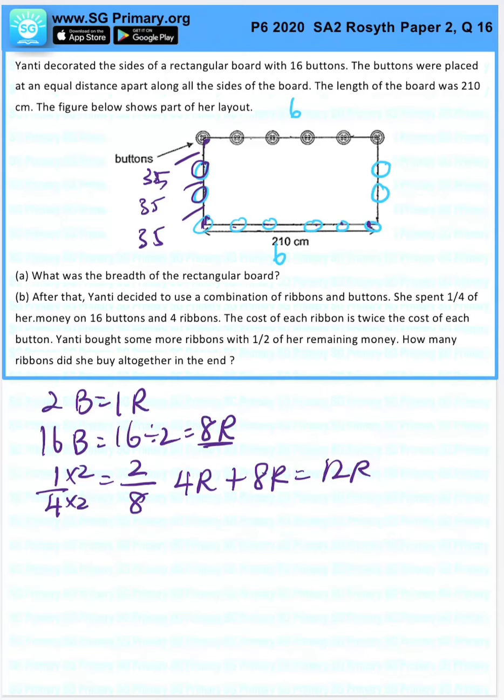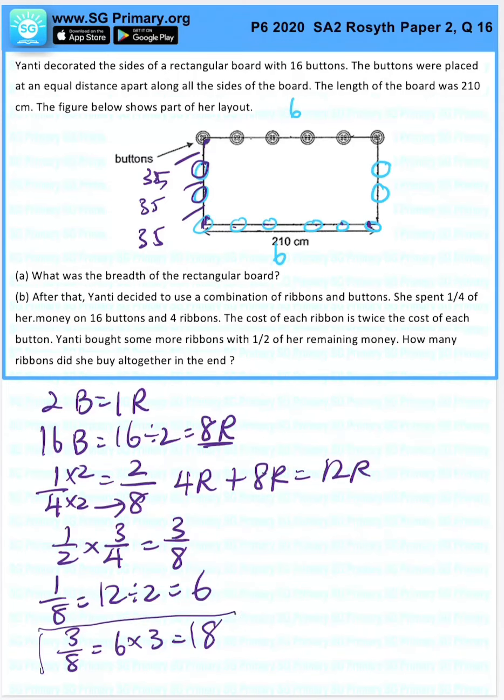Half of her remaining money is 3 over 8, that's why we change this to 8 as the denominator. So 2 out of 8 is 12. 1 out of 8 is 12 divided by 2, which is 6. 3 out of 8 is 6 times 3, which is 18. So this was how much she bought with half of her remaining money. And at first she had 4 ribbons. So total is 18 plus 4, which is 22.